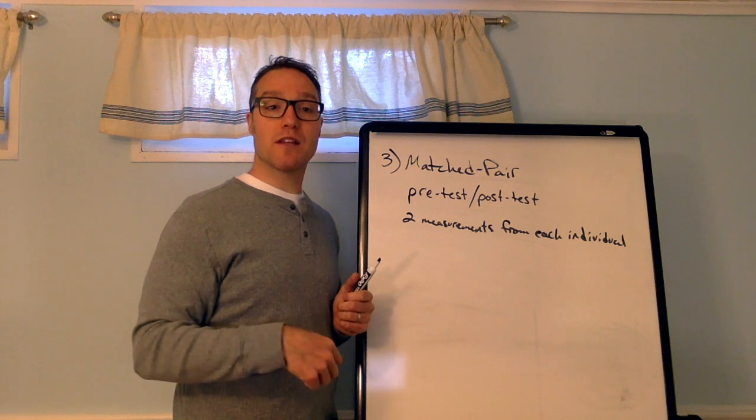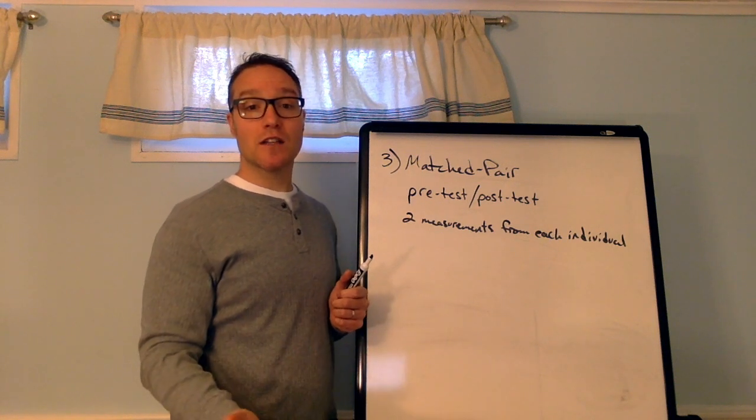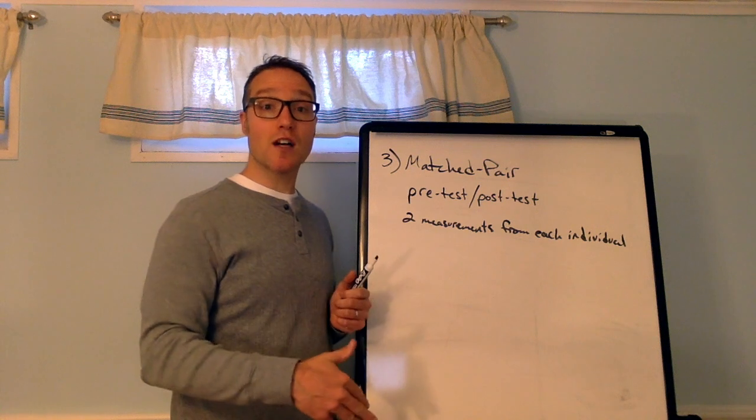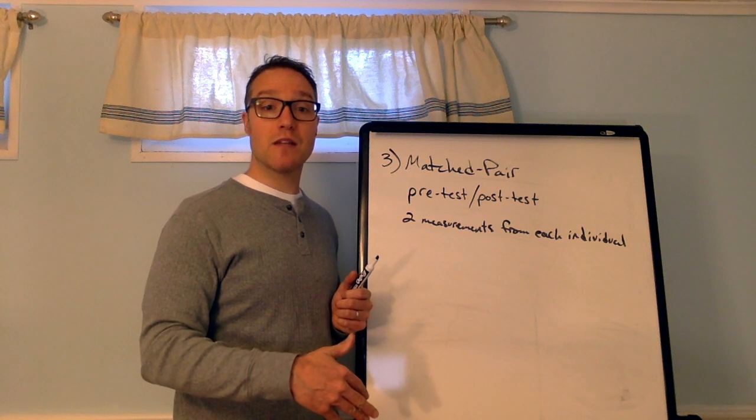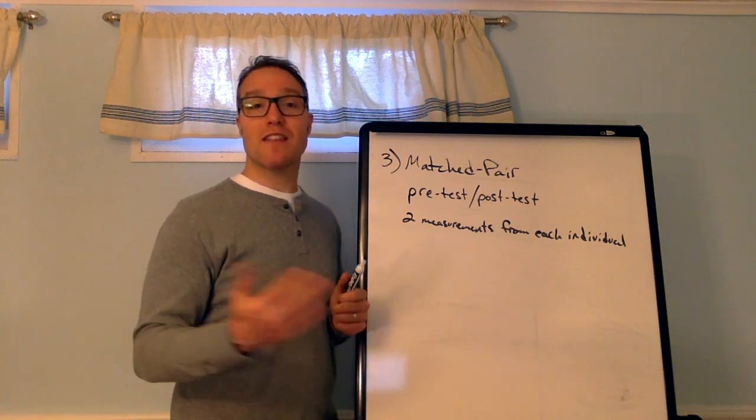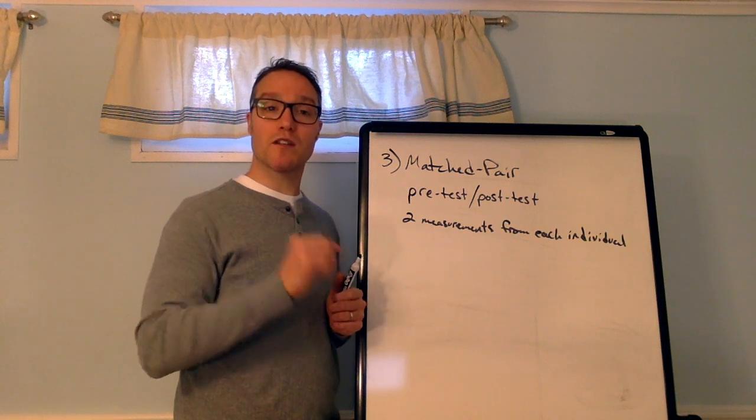Another example might be a participant is randomly assigned drug A or drug B and their heart rate is measured 15 minutes after. And then a week later, at the same time and the same place, they take the other drug and their heart rate is measured 15 minutes after. And then the results are compared. That would be a matched pair. So, two measurements, one individual. Okay.